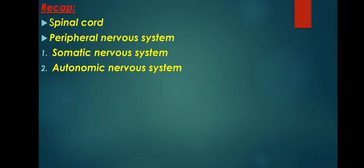In the previous section, we saw both spinal cord and peripheral nervous system. The spinal cord is a long, tube-like structure that begins at the end of the brain stem and continues down almost to the bottom of the spine. Spinal cord consists of nerves that carry incoming and outgoing messages between the brain and the rest of the body.